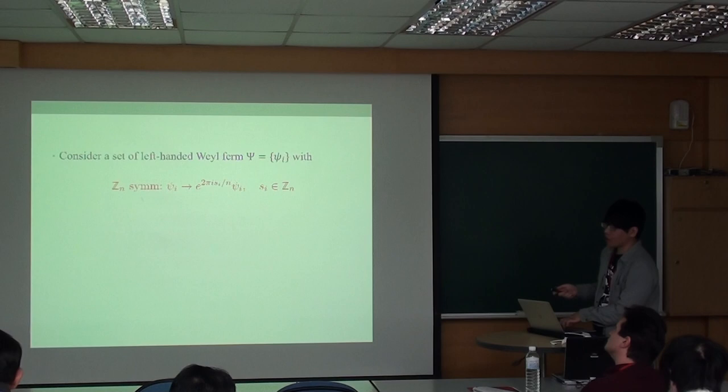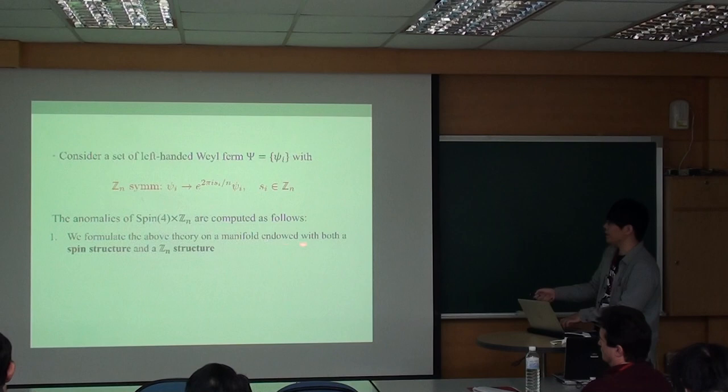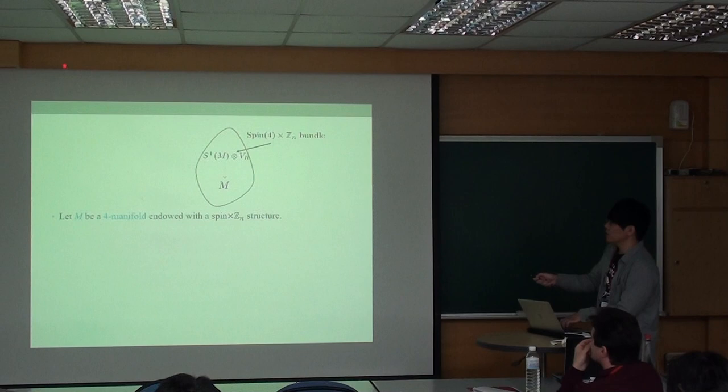I focus on the simple case, which is the symmetry group is cyclic - that is the symmetry group is Spin(4) times ZN. Consider a set of left-handed Weyl fermions with this signature transformation. The anomalies can be computed as follows: we formulate the theory on a manifold M with both spin structure and ZN structure, then we compute the global anomalies by the Dai-Freed theorem, which I will introduce later.